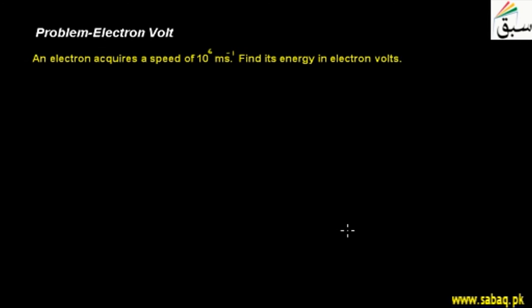Welcome students. We will have a problem solved with electron volts. We have a topic of electron volts and we will solve a problem so that our concept is clear. An electron has gained a speed of 10 to the power 6 meter per second.